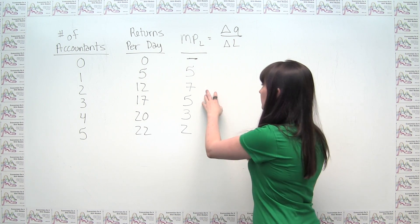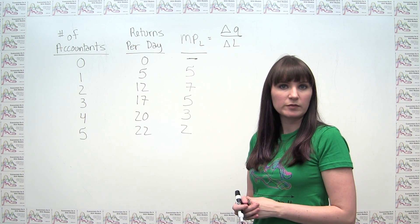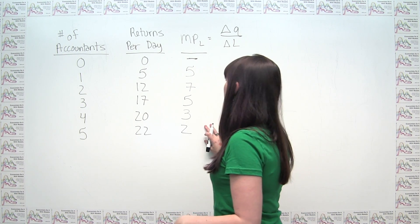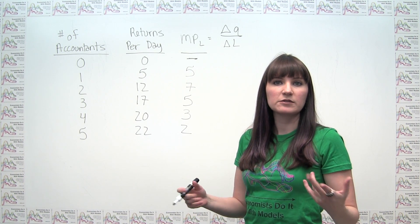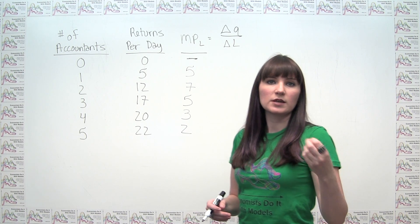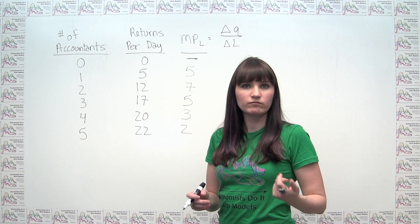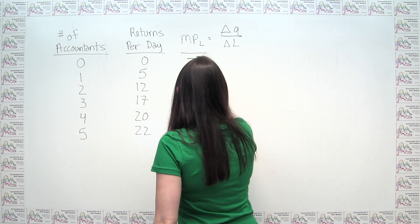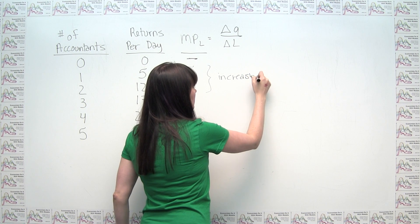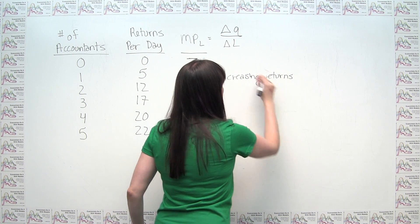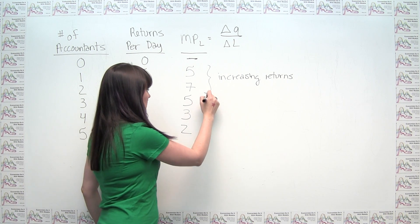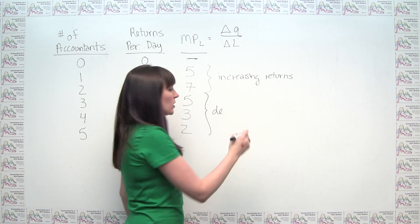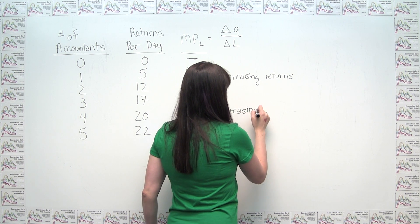Conversely, we have diminishing marginal product of labor, or decreasing returns to labor, when we see these numbers decreasing. Intuitively, when we have diminishing marginal product of labor, each incremental worker is not as useful as the one that came before. So here we had increasing returns to labor over this range, but then our numbers started getting smaller and we saw decreasing returns to labor, or diminishing marginal product of labor.